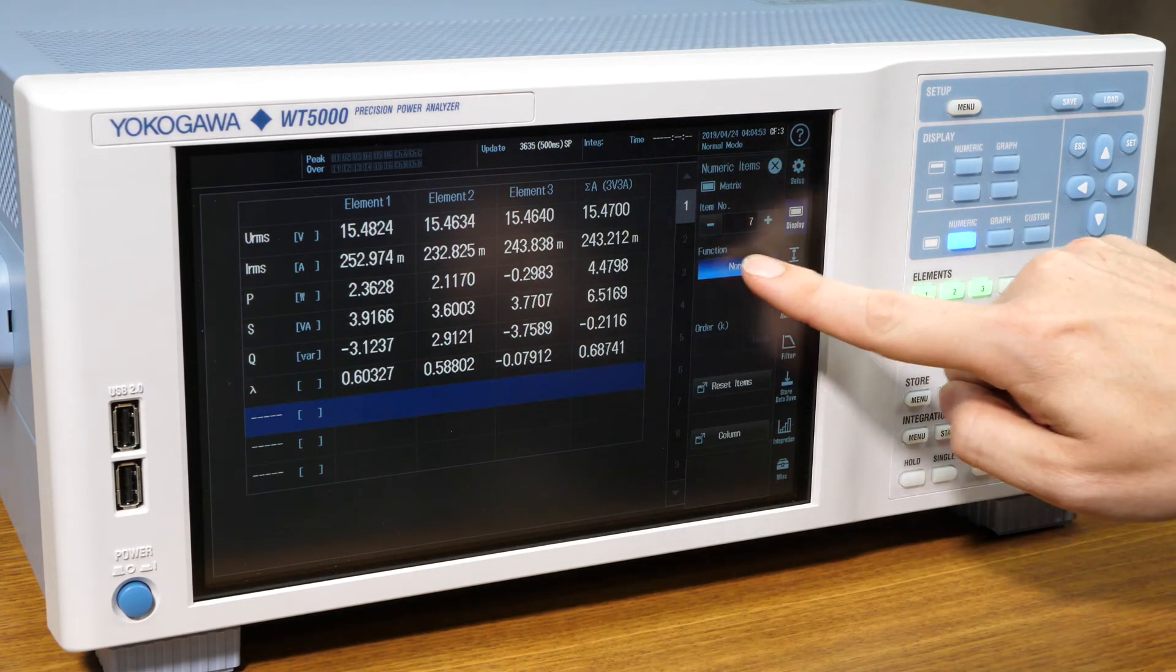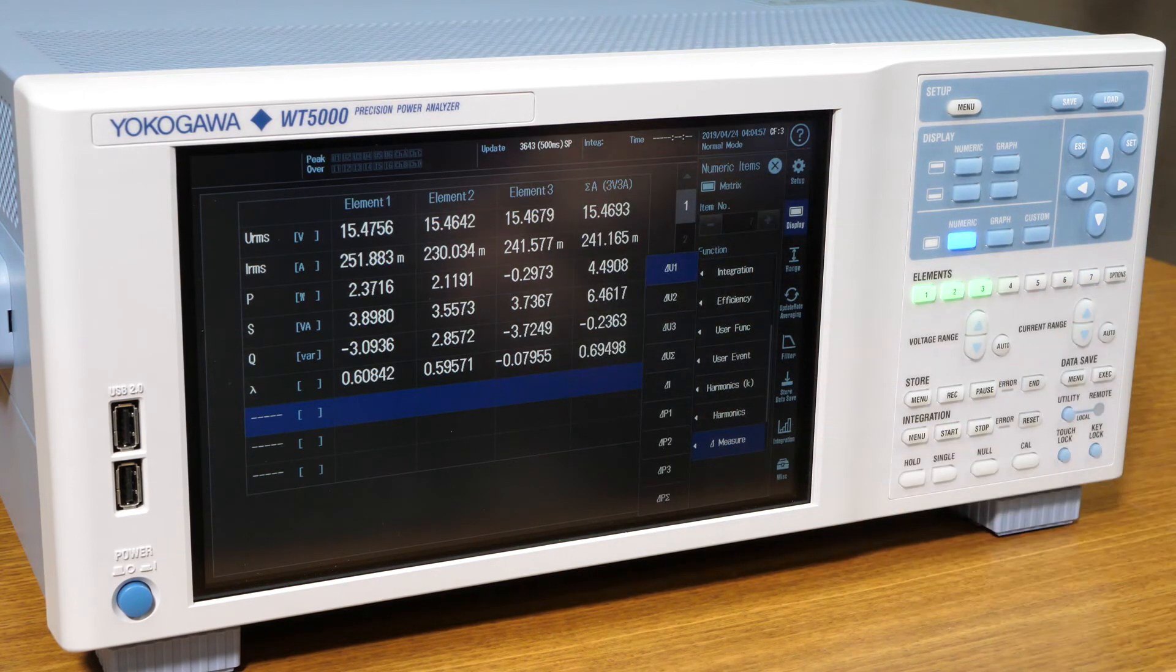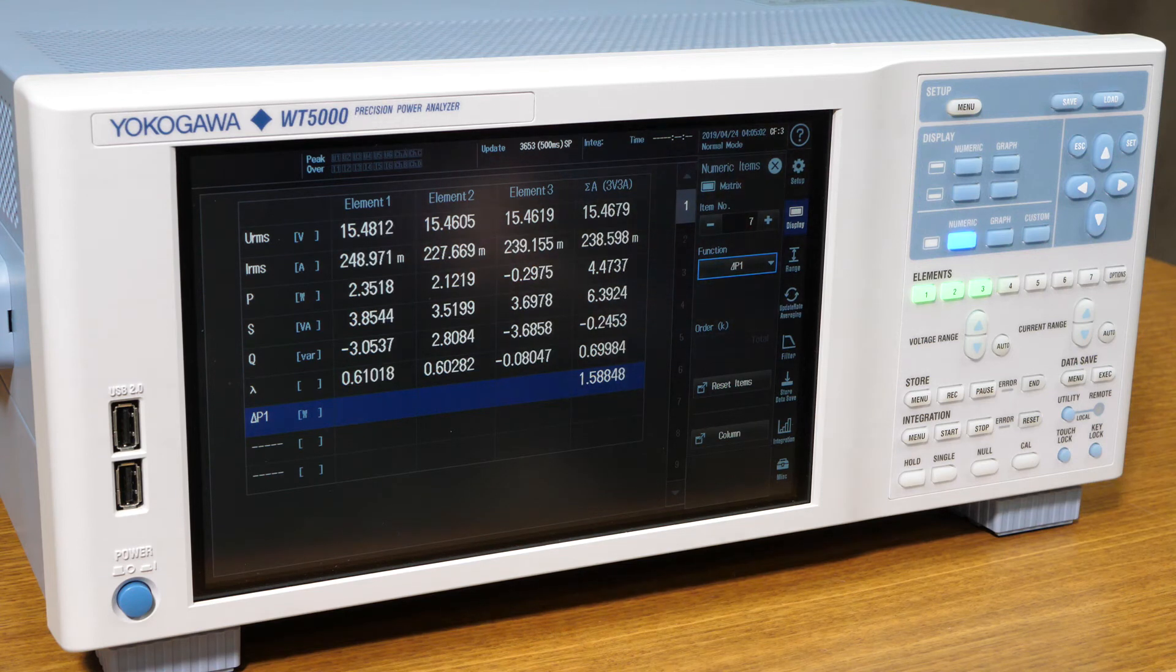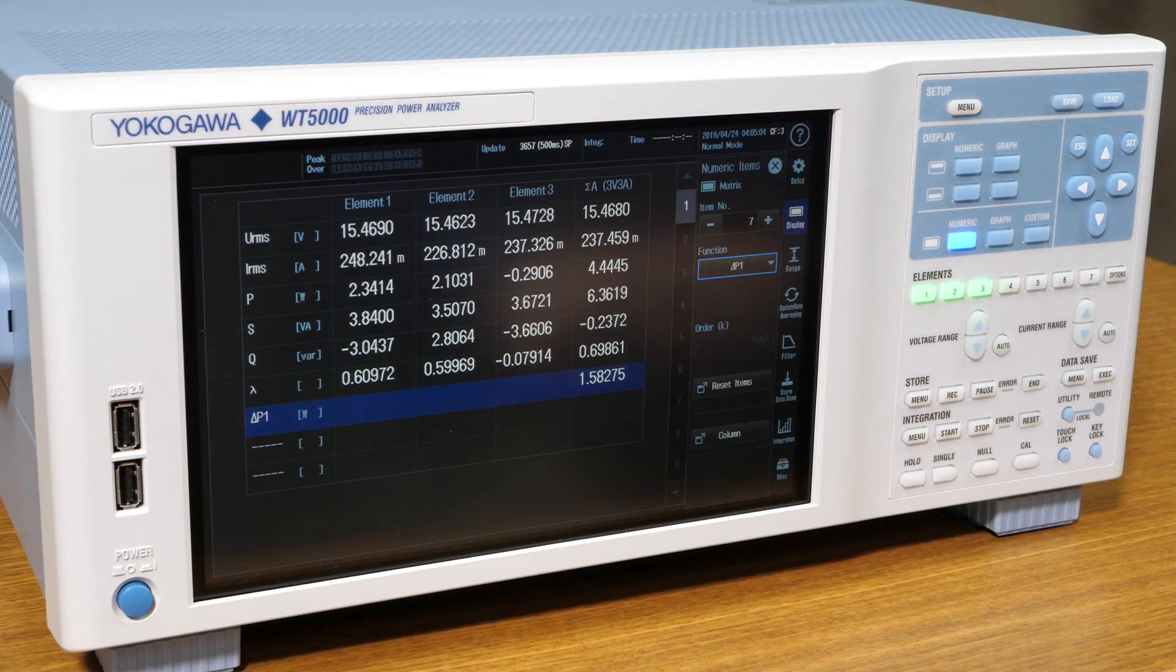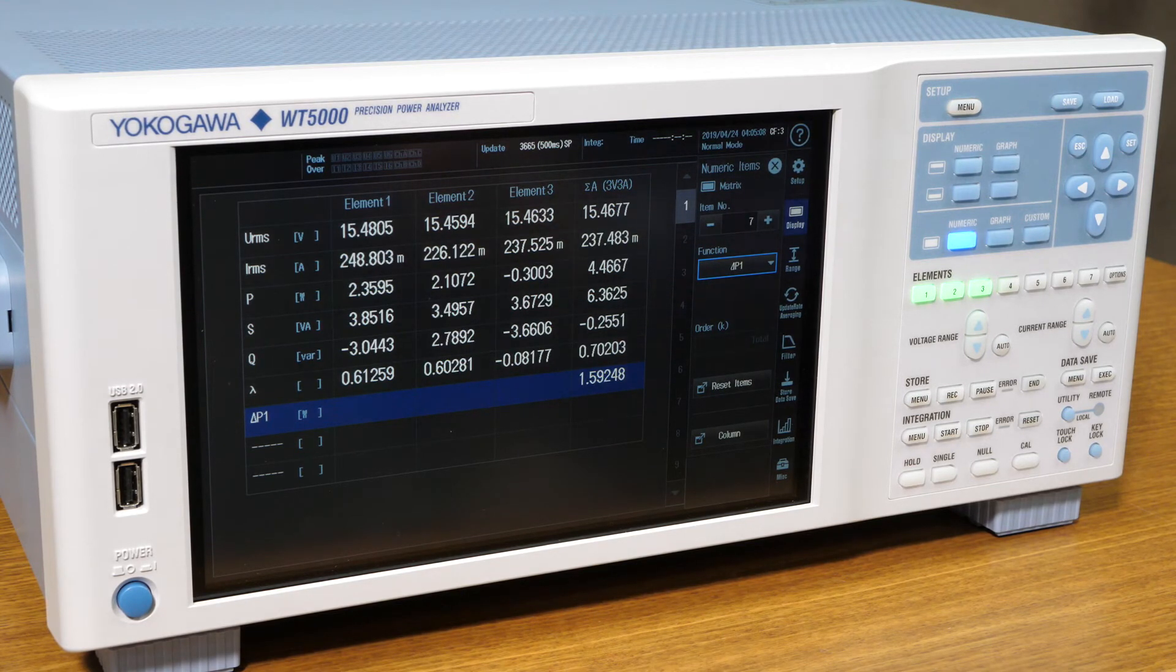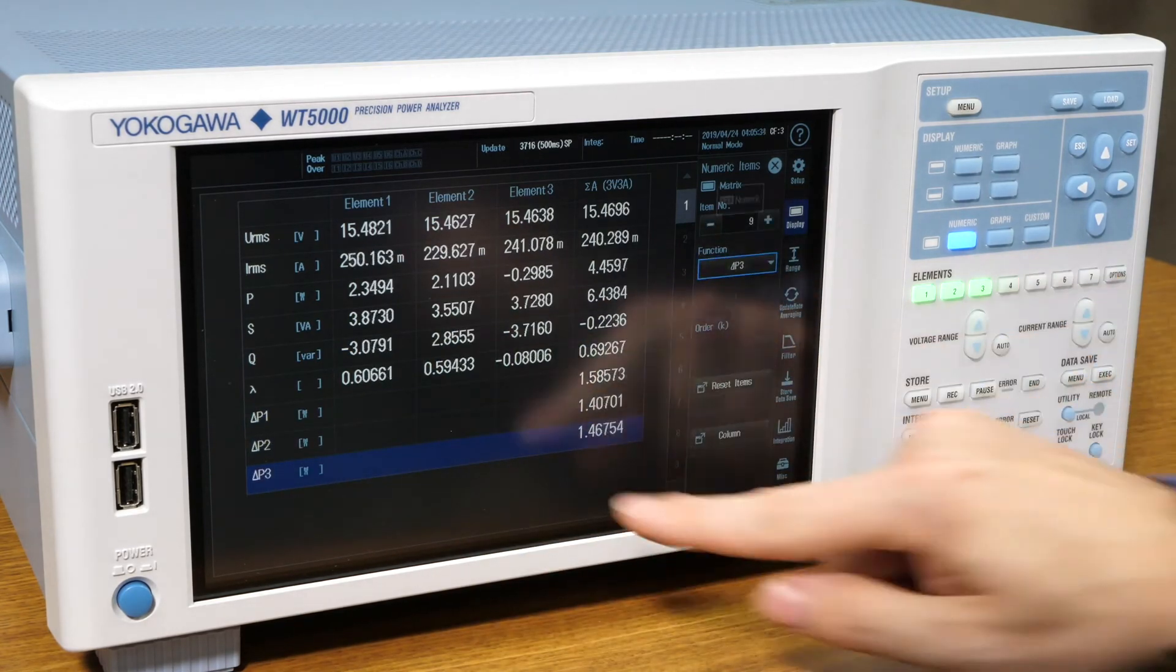We will then select the first item we want to change. For our setup, it will be the seventh item down. Then we will select the function drop-down menu and scroll down to select Measure. Here we can select from all of our available delta functions. We will select delta P1.